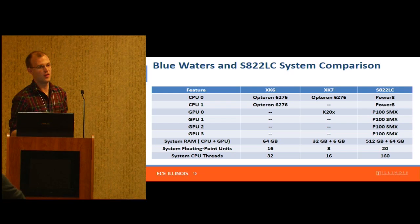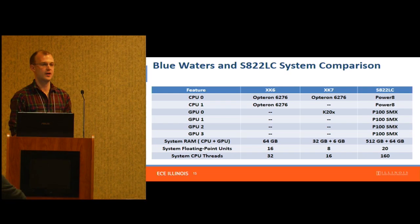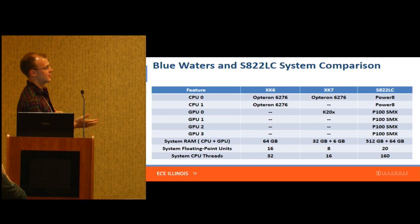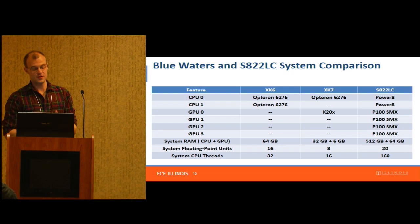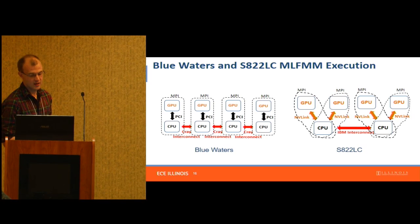This particular system has Power8 CPUs from IBM — not x86. Each CPU has 10 floating point units, and instead of two-way multi-threading like on a current Intel chip, this one supports eight-wide SMT. So the system as a whole supports 160 concurrently executing CPU threads. It also has four GPUs instead of just one — each a P100 with 16 gigabytes of HBM2 RAM, giving roughly triple the memory bandwidth of Blue Waters.